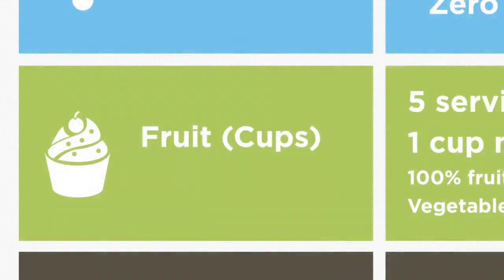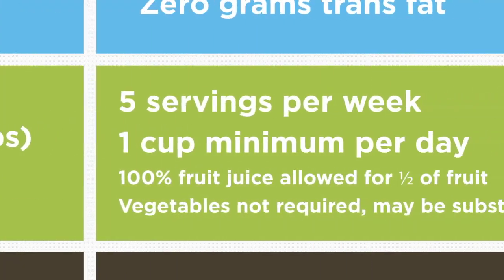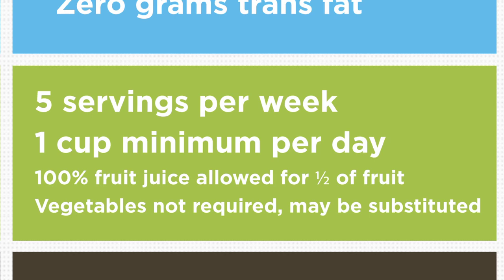The breakfast meal pattern for grades K through 12 requires five fruit servings per week with a minimum of one cup per day. 100% fruit juice may be used for only half of the total fruit offerings that a student may select over the week. Vegetables are not required for breakfast in grades K through 12, although they may be substituted for fruits.